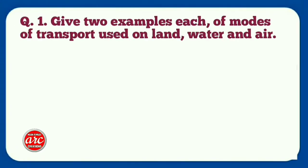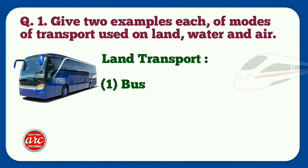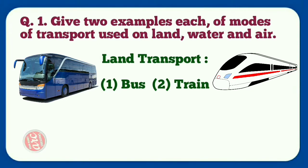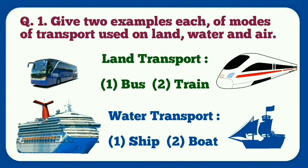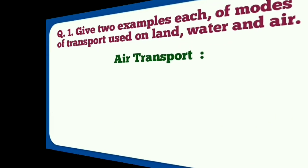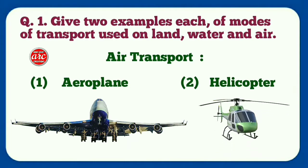Question number one: Give two examples each of modes of transport used on land, water, and air. Land transport: number one bus, number two train. Water transport: number one ship, number two boat. Air transport: number one aeroplane, number two helicopter.